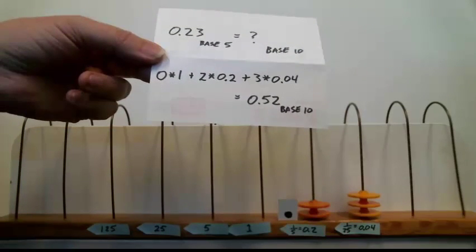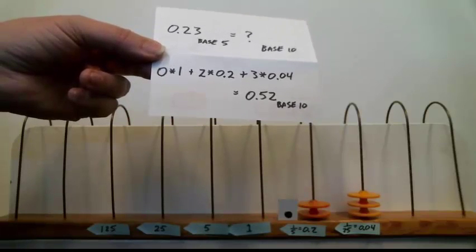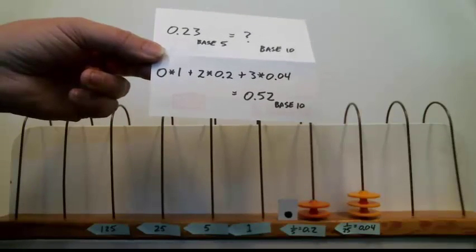So, 0.23 in base 5 is another way of writing 0.52 in base 10. Which you and I would probably call 52 hundredths.